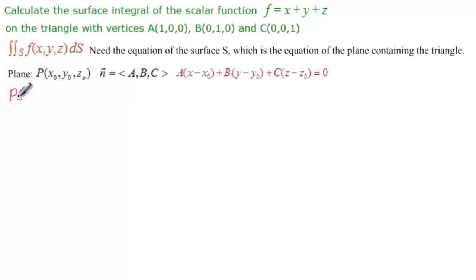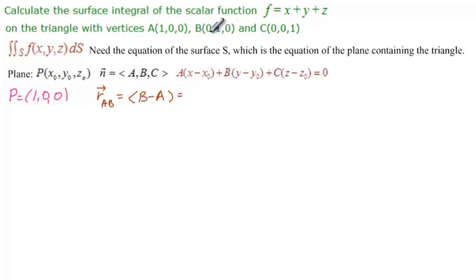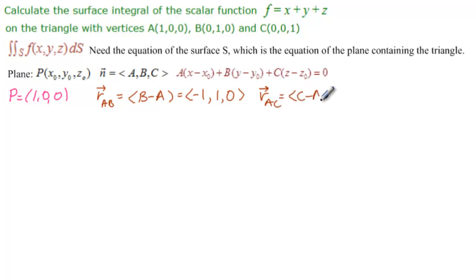Let's pick our point P — we'll just pick the first one: (1, 0, 0). The directional vector R_AB equals B minus A: (0-1, 1-0, 0-0) = (-1, 1, 0). The directional vector R_AC equals C minus A: (0-1, 0-0, 1-0) = (-1, 0, 1).